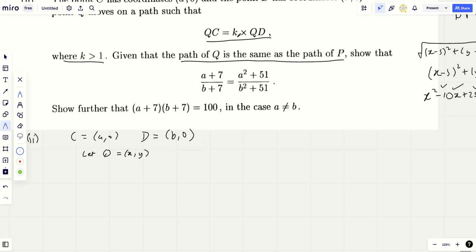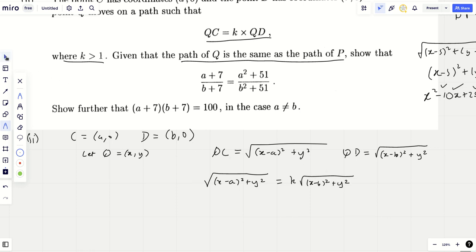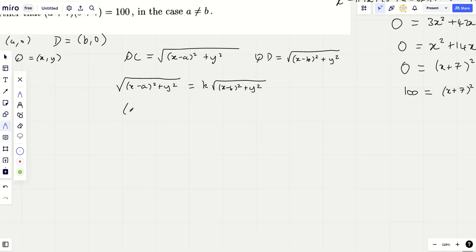Let's give this a go. We're going to just try it the same way as before, because QC equals kQD. Well, the length of QC is going to be the square root of (x-a)² plus y². Likewise for QD, it will equal (x-b)² and y². But we're going to make this QC equals kQD. So if I just square it out straight away as well, I won't rush it too much.